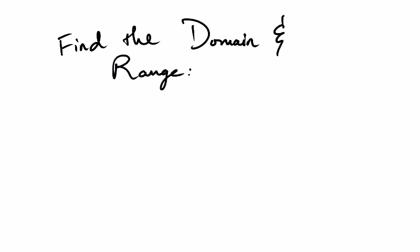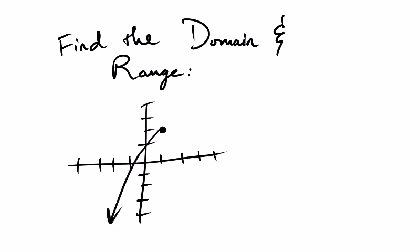So if we were to find the domain and range, let's make it a parabola just so that it's familiar from something we've done in the recent past. So we'll have a vertex at one, two, and then let's say the vertex opens down.